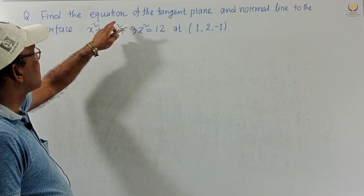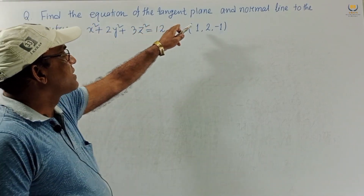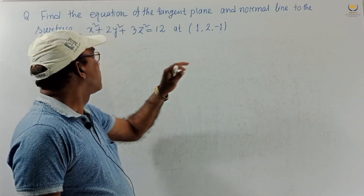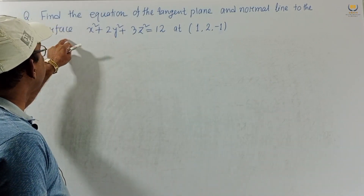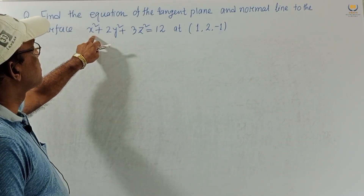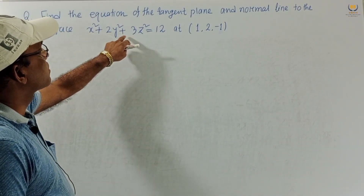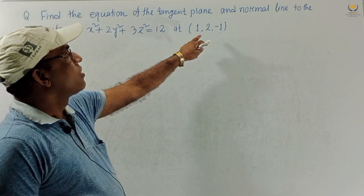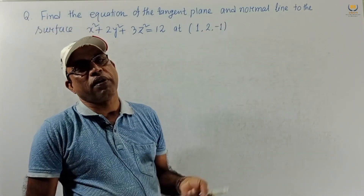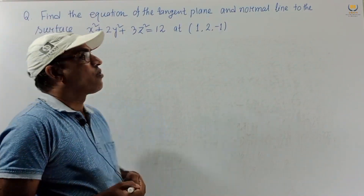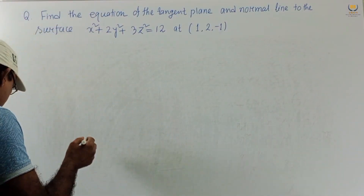Find the equation of the tangent plane and normal line to the surface x² + 2y² + 3z² = 12 at the point (1, 2, -1). Now we want to solve this problem.